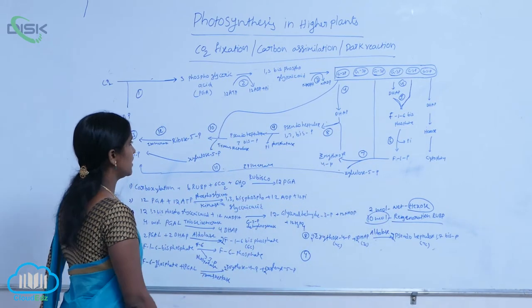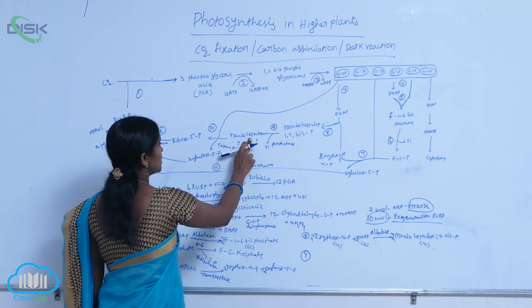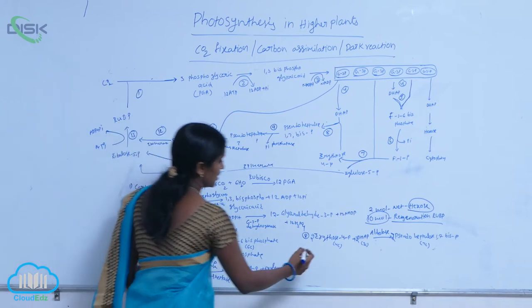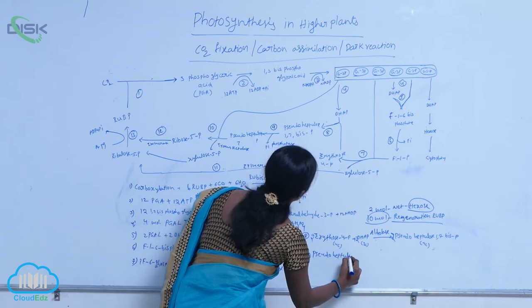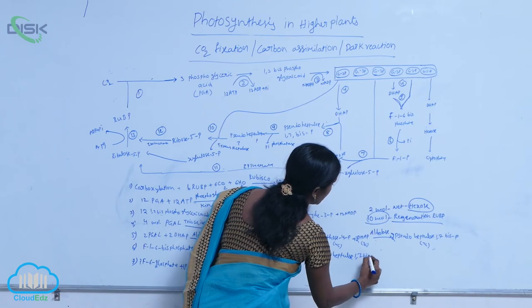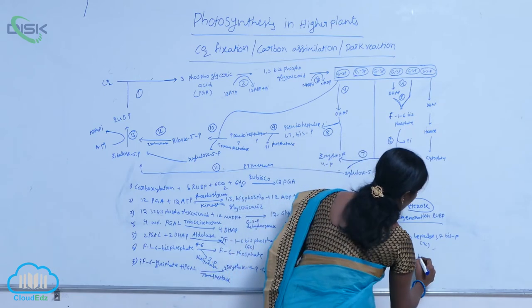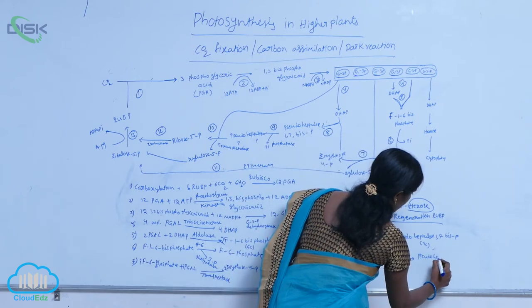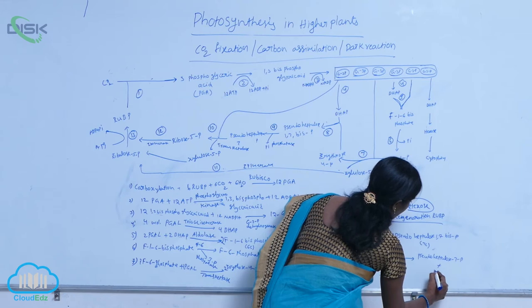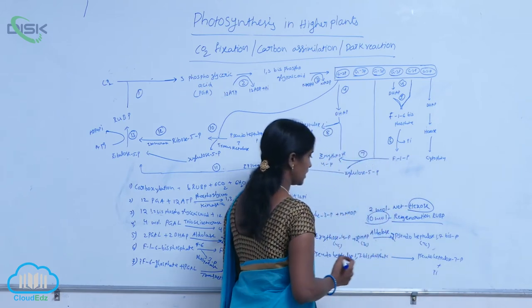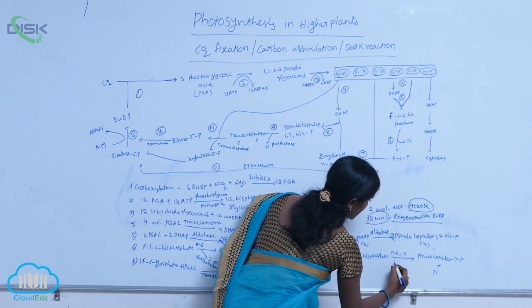The next reaction is a phosphorylation reaction. Here, pseudo-heptalose 7-phosphate is produced by losing one inorganic phosphate. Pseudo-heptalose 1-7-bisphosphate is formed as pseudo-heptalose 7-phosphate by losing one inorganic phosphate molecule. This reaction is mediated by pseudo-heptalose 7-phosphate.